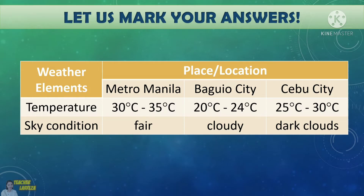There are three places given on the report which are Metro Manila, Baguio City, and Cebu City. The temperature in Metro Manila ranges from 30 degrees Celsius to 35 degrees Celsius, 20 degrees Celsius to 24 degrees Celsius in Baguio City, and 25 degrees Celsius to 30 degrees Celsius in Cebu City. We have the hottest temperature in Manila and coldest temperature in Baguio City. In terms of sky condition, the weather is fair in Metro Manila, it is cloudy in Baguio City, and there are dark clouds in Cebu City. Therefore, the weather is not good in Cebu City, and they are experiencing a gloomy weather.